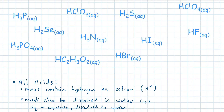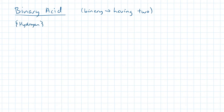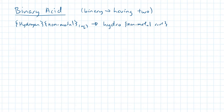But first, let's start off with a simpler acid — the binary acid, where binary means two. The first atom has to be hydrogen, and the second atom a nonmetal. This compound must also be dissolved in water to become an acid. The nomenclature for binary acids always starts with hydro, followed by the root of the nonmetal, and ends with ic acid.